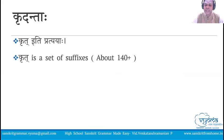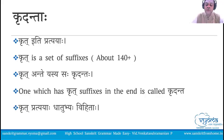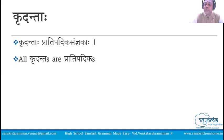How many suffixes are there? About 140 plus suffixes are there in Paninian Ashtadhyayi. The definition of krita is that which has krita at its end — krita ante yasya saha krita nthaha. These krita pratyayas are added to the dhatus. We also know that to the dhatus, ting pratyayas are also added, which we have already studied, wherein we get forms like patati, patataha, patanti — all those forms in different lakaras. These kritaantas now become pratipadikas.